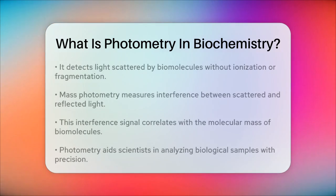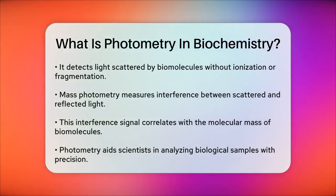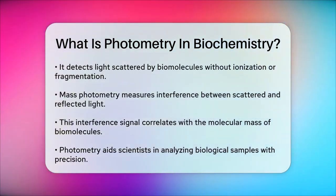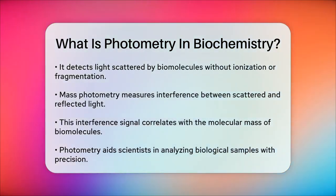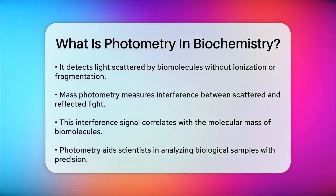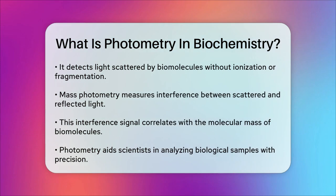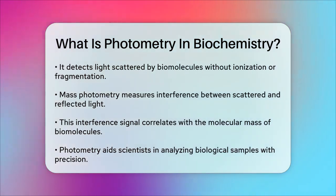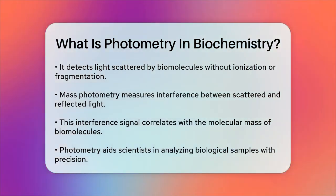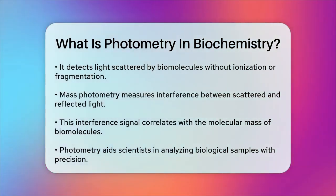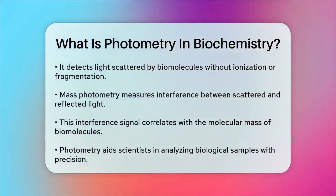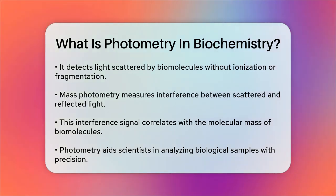Mass photometry works by illuminating biomolecules with a light beam and measuring the interference between the light scattered by the molecules and the light reflected by the surface they are on. This interference signal is directly correlated with the molecular mass of the biomolecules.